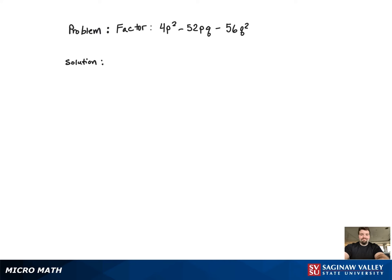For this factoring problem, we will begin by taking out the GCF, the greatest common factor, which is a 4.